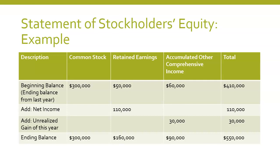Here is a typical statement of stockholders' equity. They show a beginning balance, any additions, any subtractions, and they come down to an ending balance. In this particular case there are only additions — they have positive net income and a positive unrealized holding gain, so no net loss and no unrealized holding losses this year. We start with the beginning balance of common stock, which would also include the additional paid-in capital account.